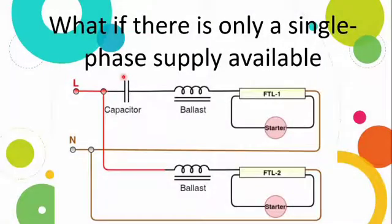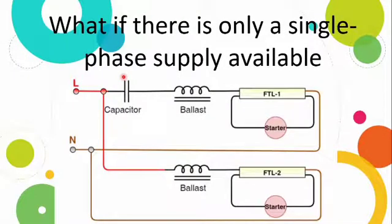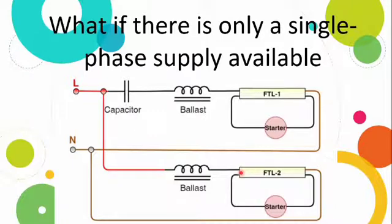The second method: how can we reduce the stroboscopic effect in a single-phase system? We connect an extra lamp — if we use a single-phase system, we can use twin tube lights. When we use twin tube lights in one phase with two lamps, we use the twin tube light diagram. There is a connection called the lead-lag or inner tube light connection. In this connection, we connect a capacitor to one of the lamps.